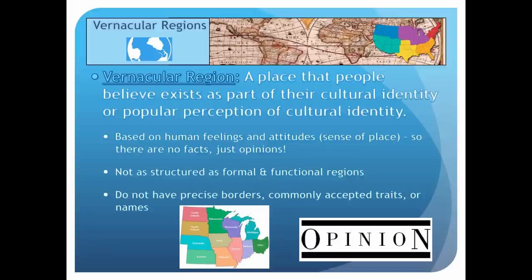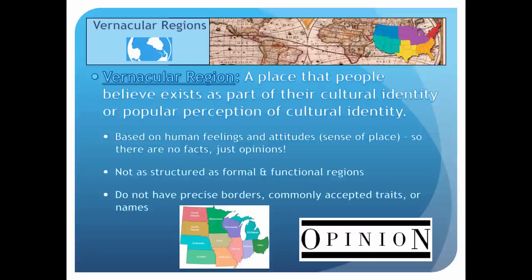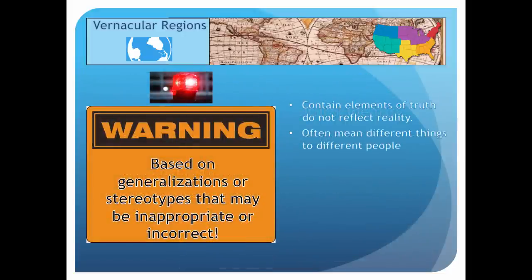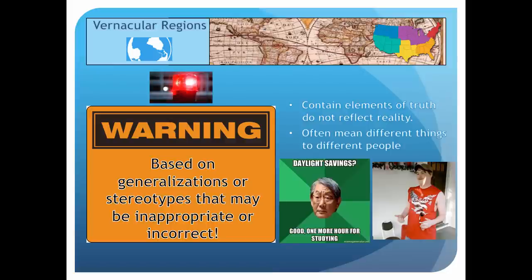Boundaries of vernacular regions are even less defined than functional regions because they lack structure. Comparing the three: formal regions have very clear boundaries — we measure and can prove them. Functional regions are fairly clear, but get fuzzy at the edges. Vernacular regions are different for different people, lack structure, and are much harder to define. We also have to be very careful because vernacular regions are often formed on the basis of stereotypes that may be inappropriate or incorrect — for example, assuming all people in the South are hillbillies. Many stereotypes contain elements of truth, but most do not reflect reality.